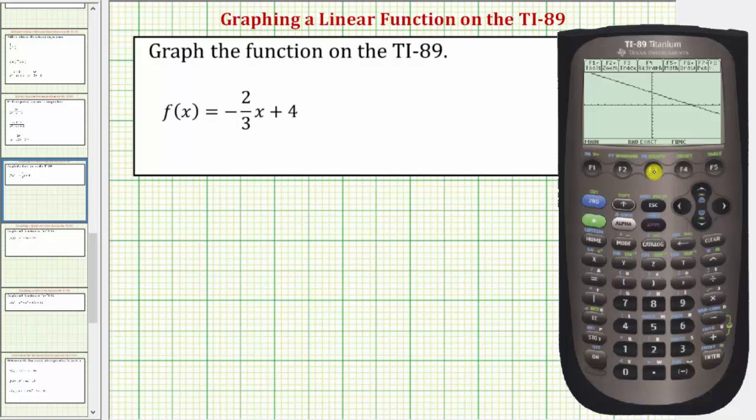If we press F3 for trace, we can scroll along the line, and notice how the approximate coordinates appear toward the bottom of the screen. However, if we want more accurate points on the line, we can use the table feature.